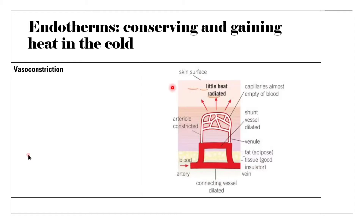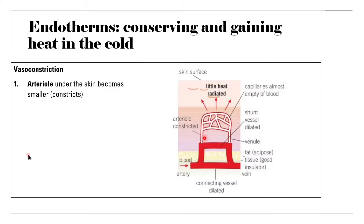Here we have a diagram of the skin and the blood vessels beneath it. In vasoconstriction, the arteriole under the skin becomes smaller — it constricts. You can see the arteriole has narrowed its lumen. The shunt vessel, which connects the two ends of the arteriole to the venule, becomes larger and dilates. This shunt vessel bypasses the capillaries at the skin surface, going straight from the arteriole to the venule.